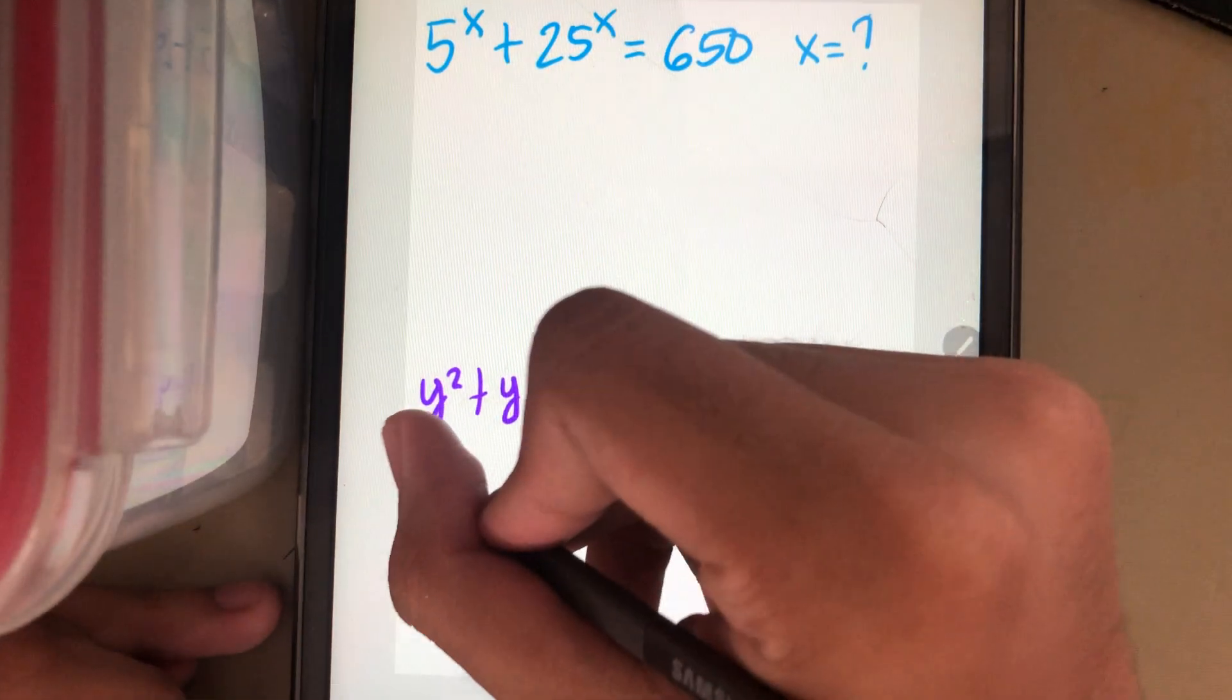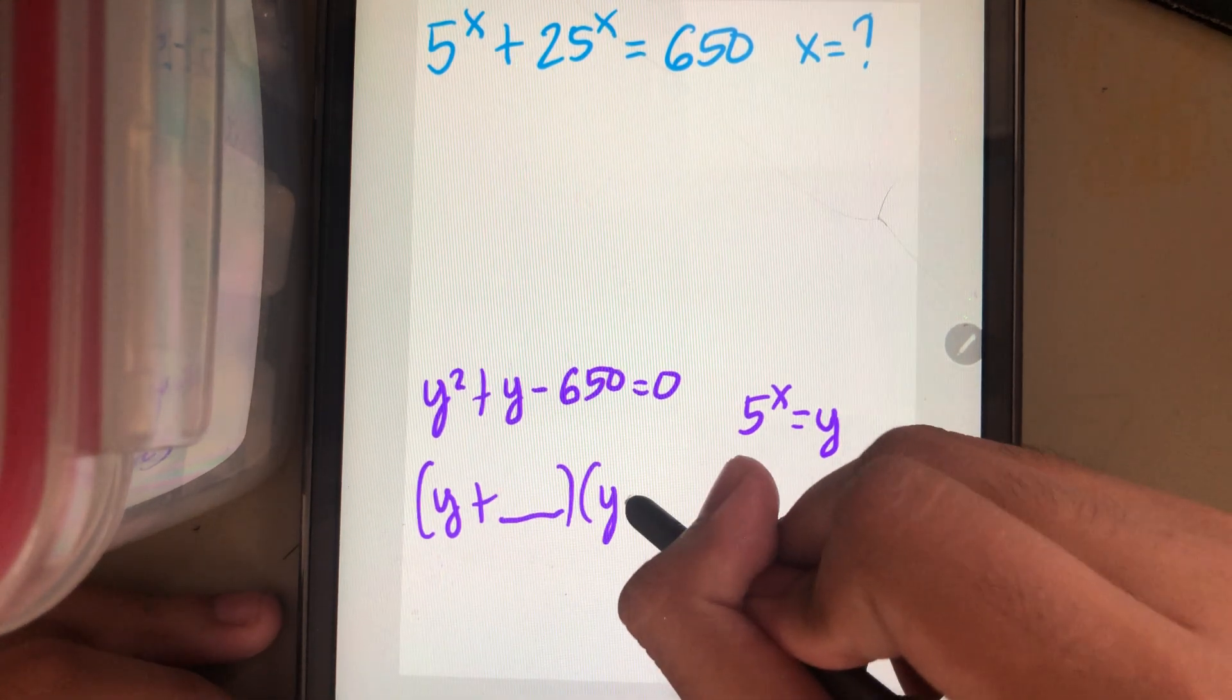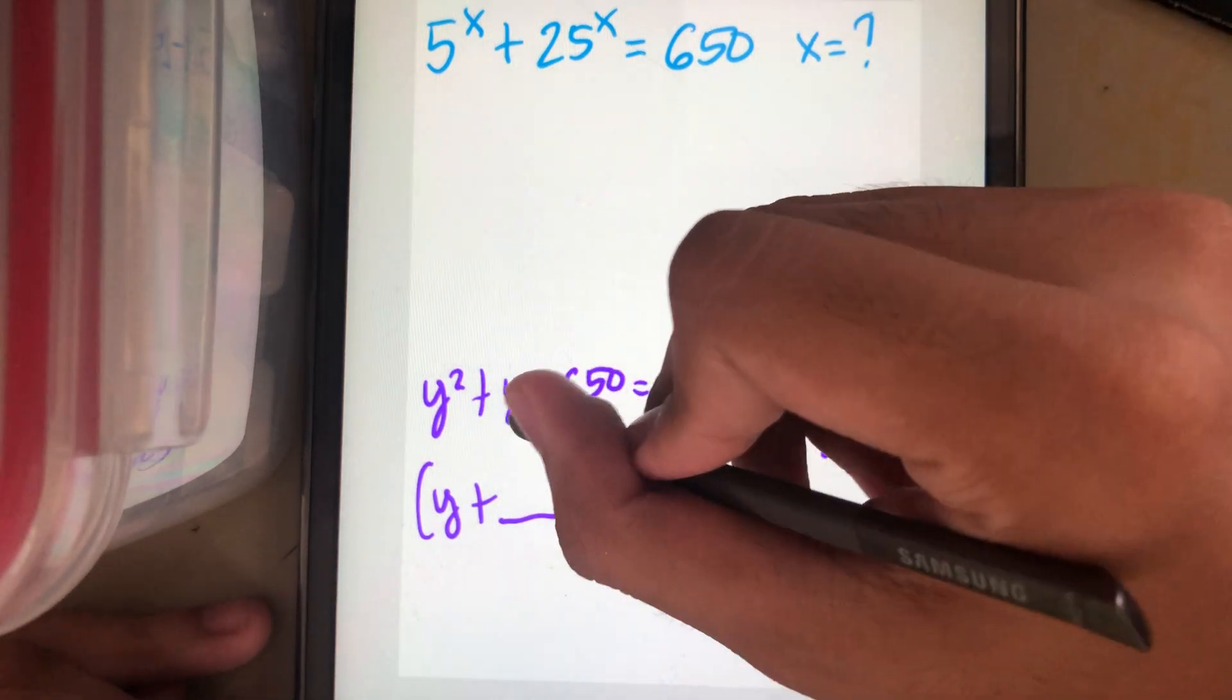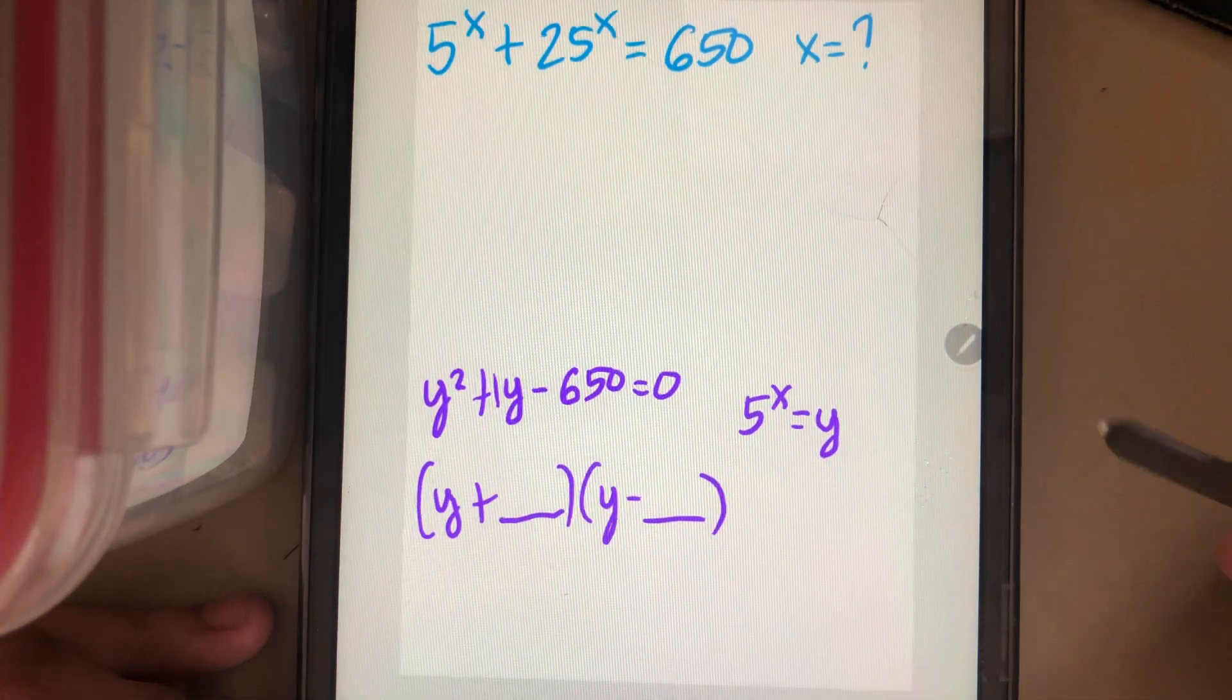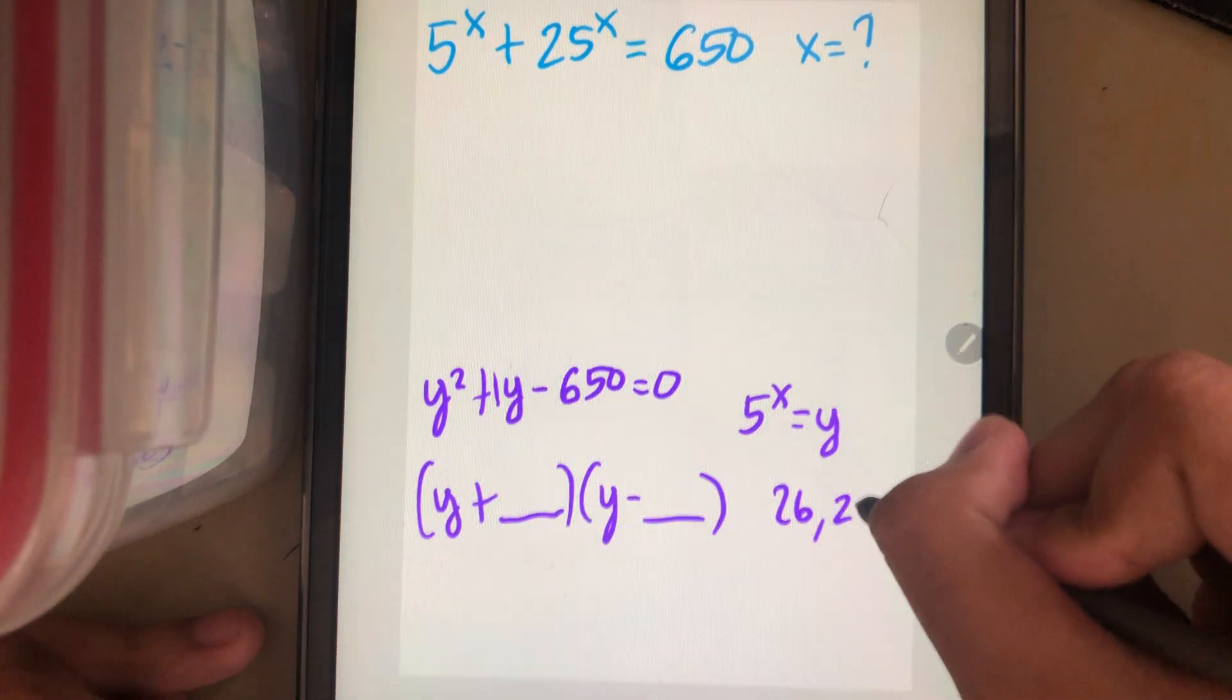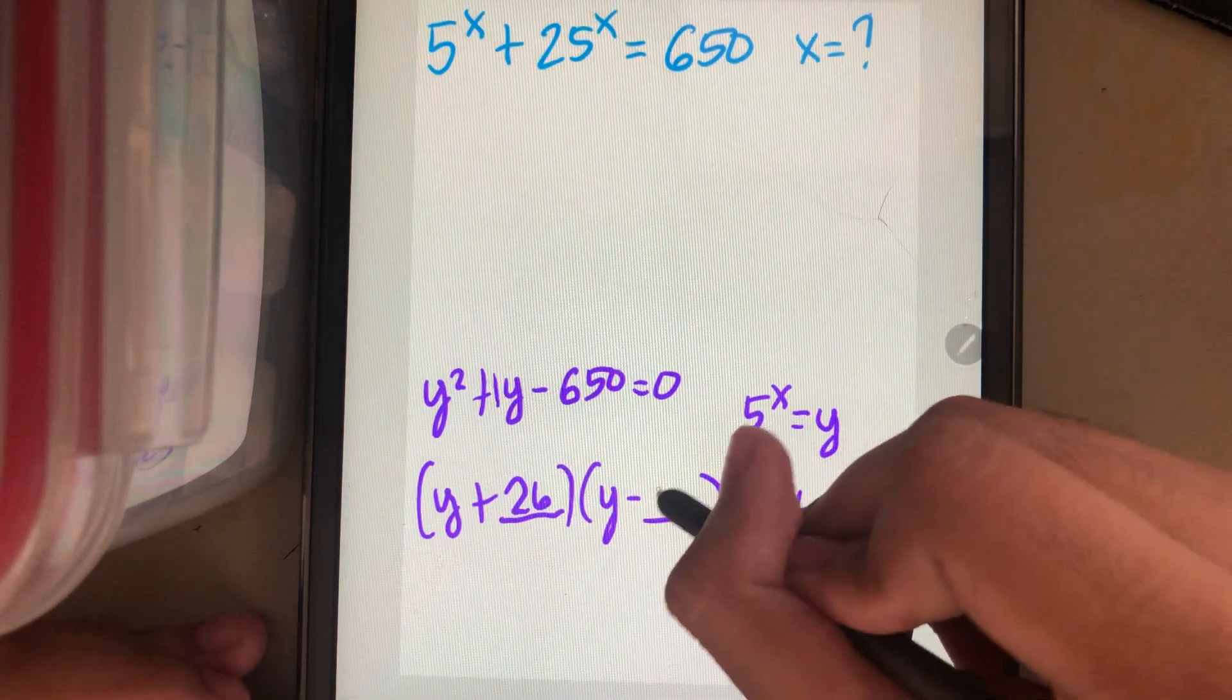We can put this in the form of y plus blank times y minus blank. We have to find the factor of 650 that make the difference of 1, and the positive number is bigger. 650 can be 26 and 25. And the bigger number is on the positive. So, y plus 26 times y minus 25.